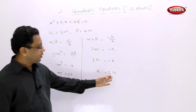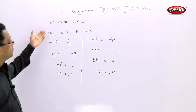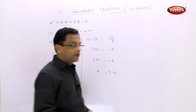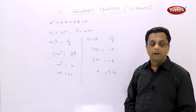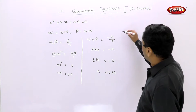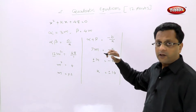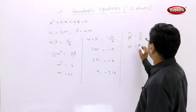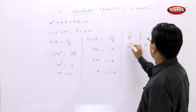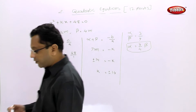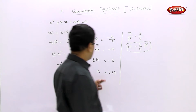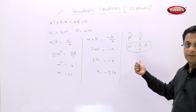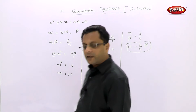Using sum of roots: 3m + 4m = 7m = -k/1. Since m = ±2, we get ±14 = -k, so k = ±14. We have found the value of k. You can also use the method where alpha/beta = 3/4, so alpha = (3/4)β, and substitute into the two equations to get the same answer.